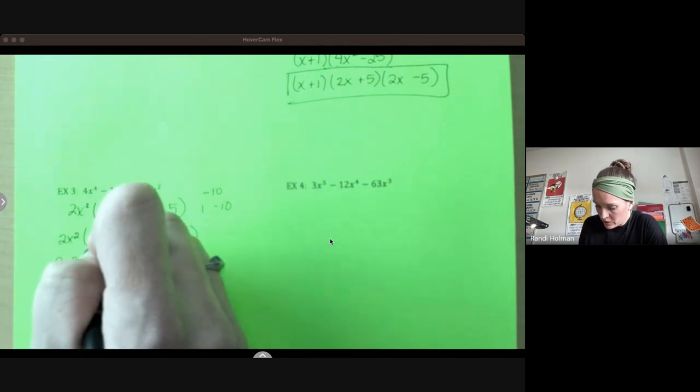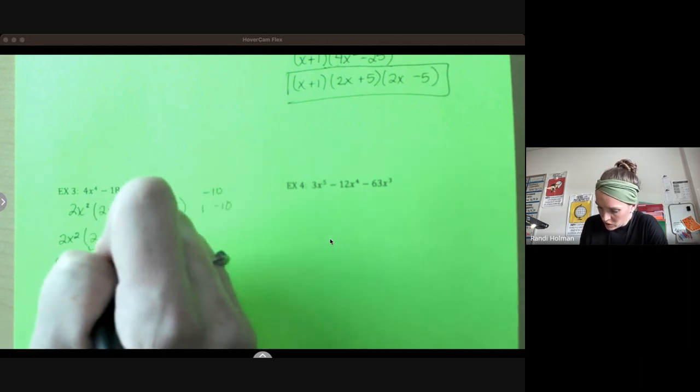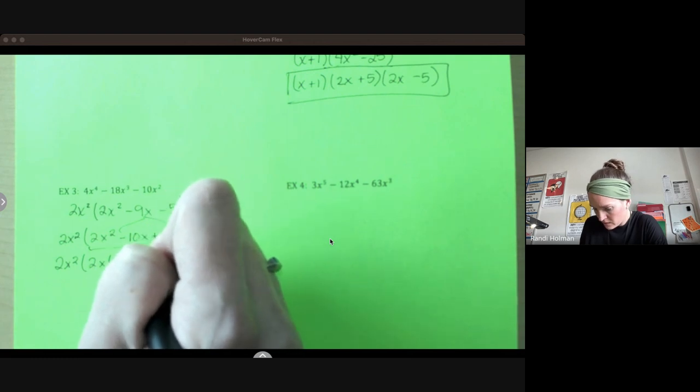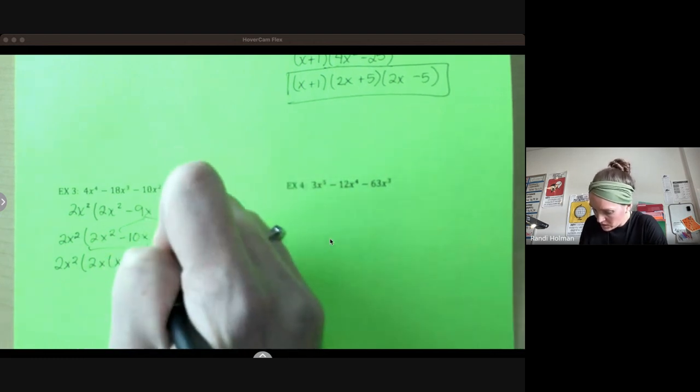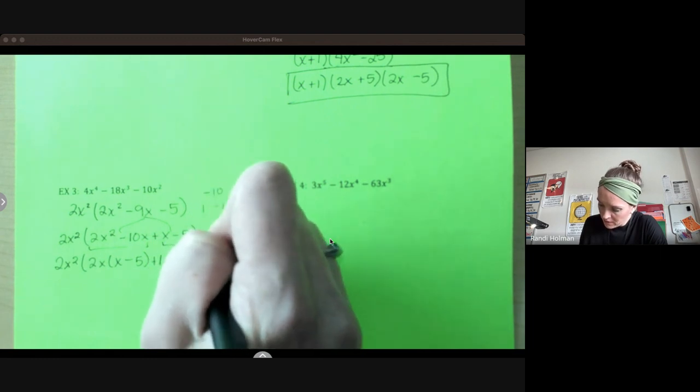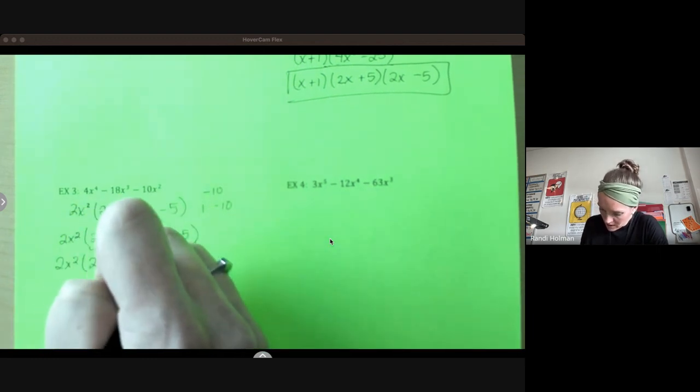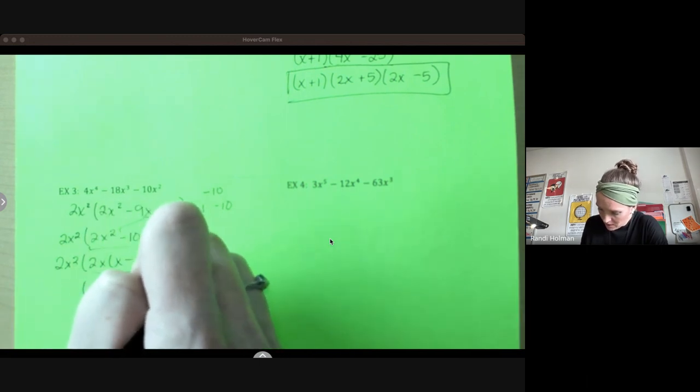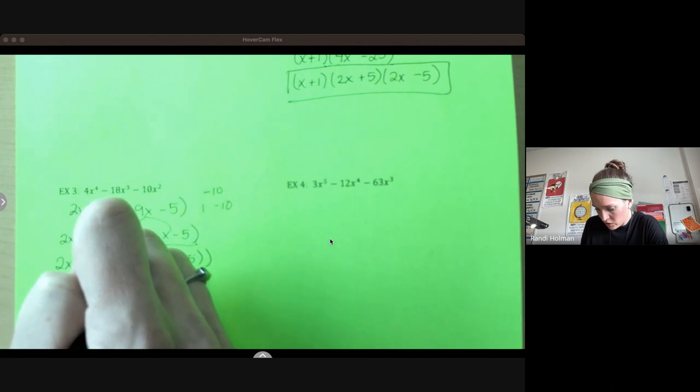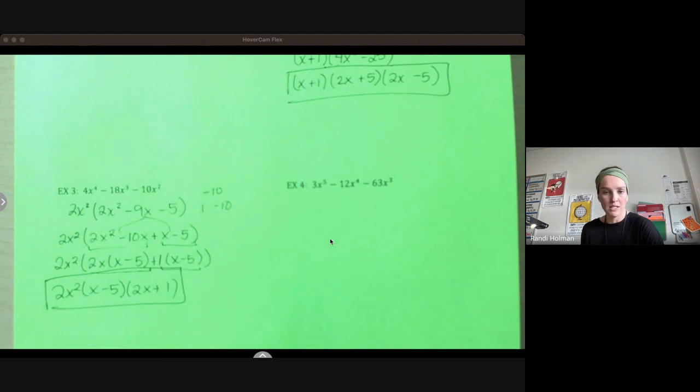Now we have four terms. So we're grouping. Greatest common factor here is 2x and we're left with x - 5. Ooh, that matches this. So I'm just going to pull out a one here, x - 5. Now these two both have x - 5 and we're left with 2x + 1. Bring down your 2x². Check. Can't factor those further. So we're done.